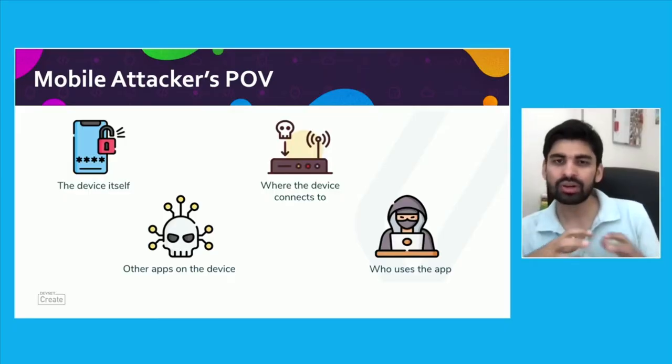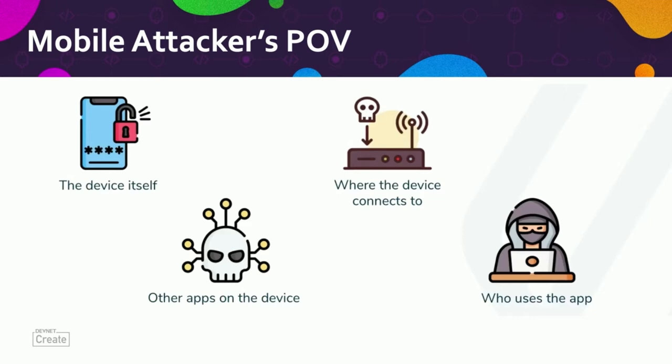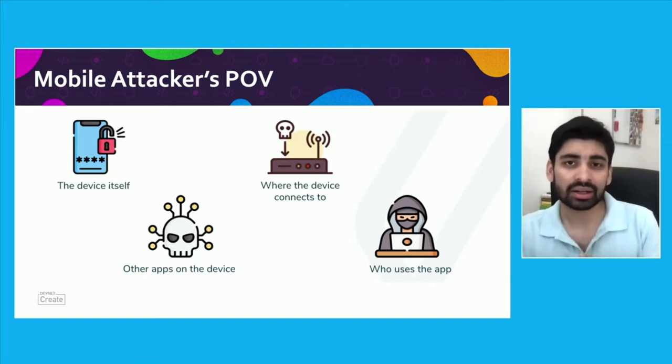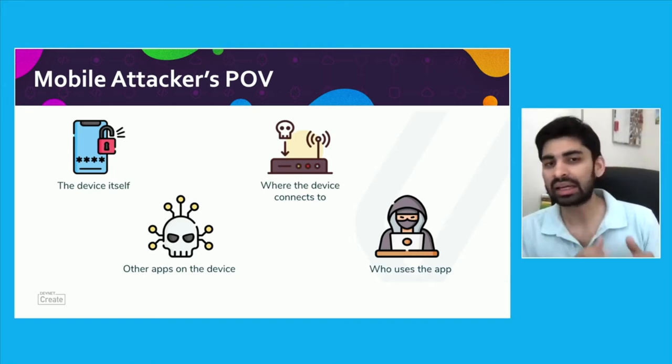With the shift in mobile usage there is a shift in the attacker's mindset — mobile is now the primary target to extract information and breach into enterprises or individuals. If you look at mobile from an attacker's point of view, there are four different aspects. Traditionally we used web applications with one interface relying on the browser to connect to the backend. When it comes to mobile apps, there are four different ways an attacker can target a given mobile app or its data.